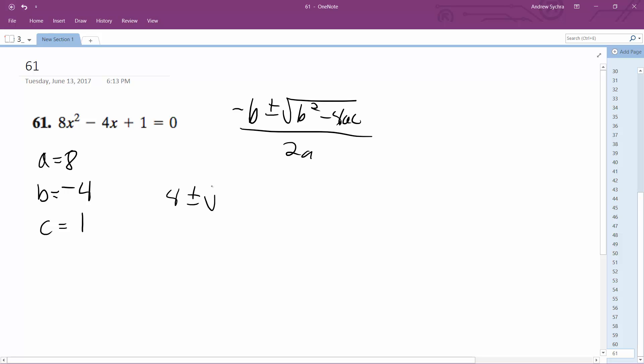So we get 4 plus or minus square root of (-4) squared, which is 16, minus 4 times 8 times 1, all over 2a, which is 2 times 8.